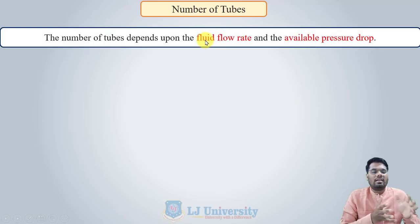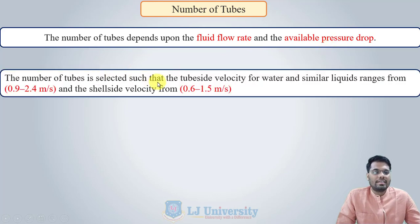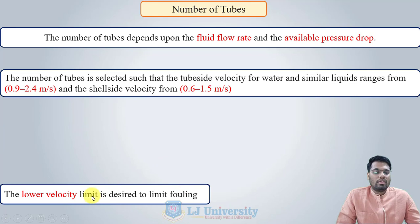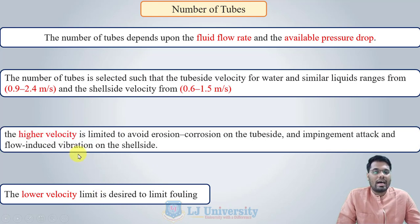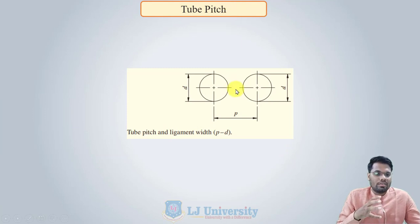The number of tubes depends upon the fluid flow rate and the available pressure drop. The number of tubes is selected such that the tube side velocity for water and similar liquids ranges from 0.9 to 2.5 m/s, and the shell side velocity varies from 0.6 to 1.5 m/s. The lower velocity limit is set to limit fouling, while the higher velocity limit is set to avoid erosion, corrosion on the tube side, and vibration.